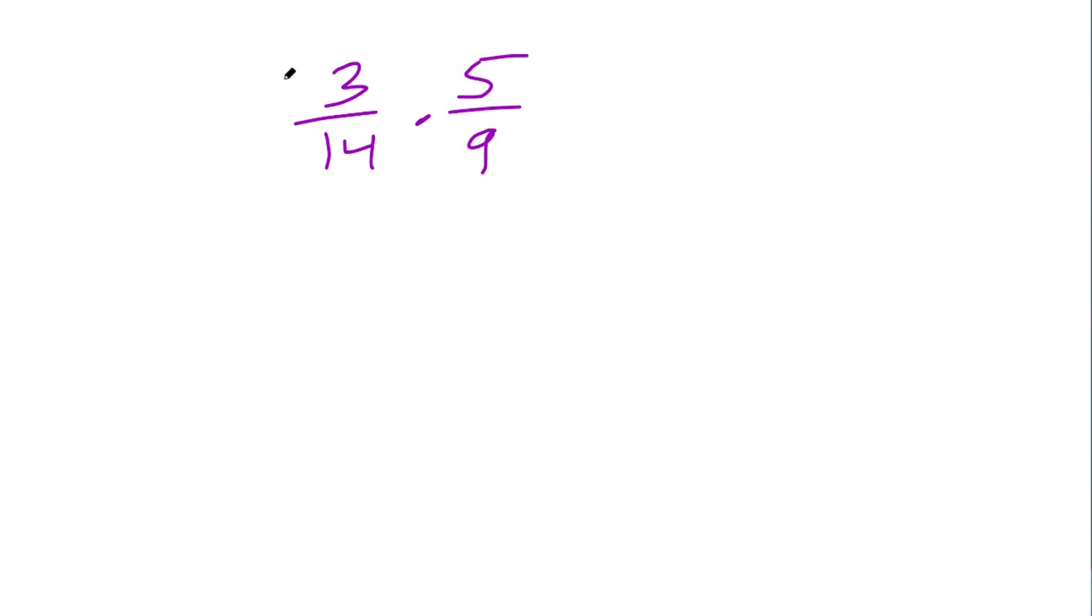So to simplify this fraction, I'm simply just going to divide the left-hand numerator by 3 and the right-hand denominator by 3, which reduces my fraction to 1/4 times 5/3. Now when I multiply straight across, I get 5/12, which again is going to be in its reduced form.